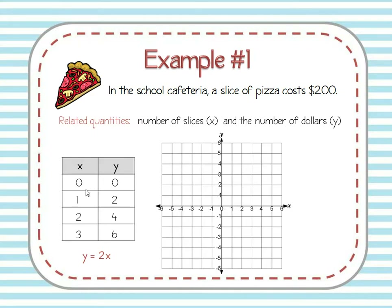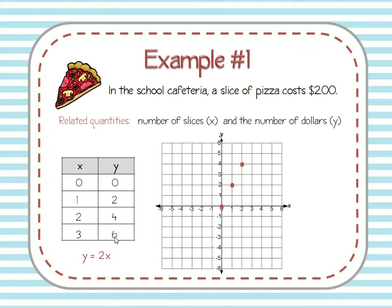Another way to express this relationship is by graphing it on the coordinate plane. When I have zero pieces of pizza I owe zero dollars, so I go to the point (0, 0) — the origin — and plot that point. When X is one, Y is two, so I plot a point there. Remember, we first go over and then up. When X is two, Y is four, so I plot a point there.